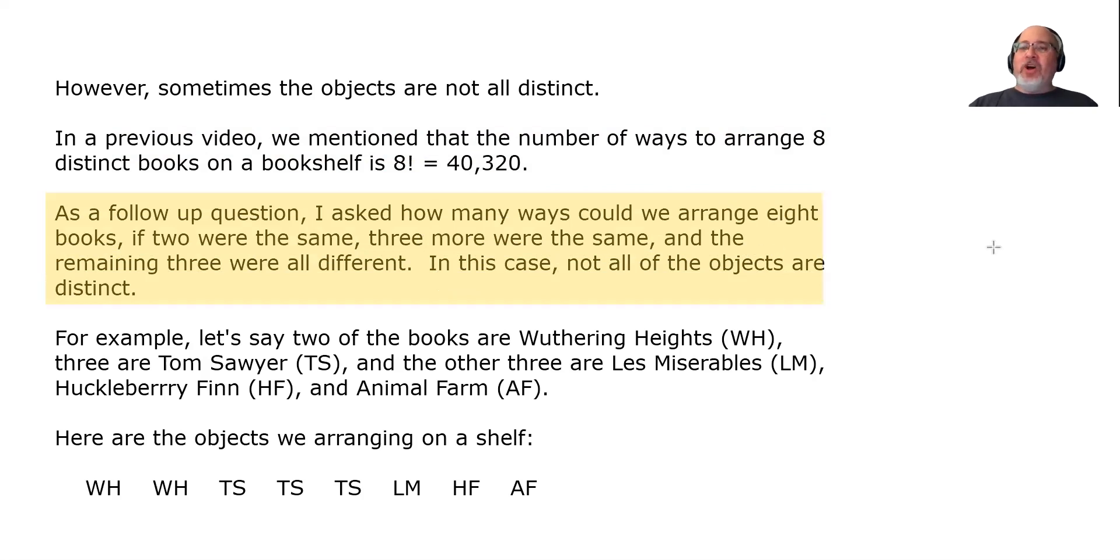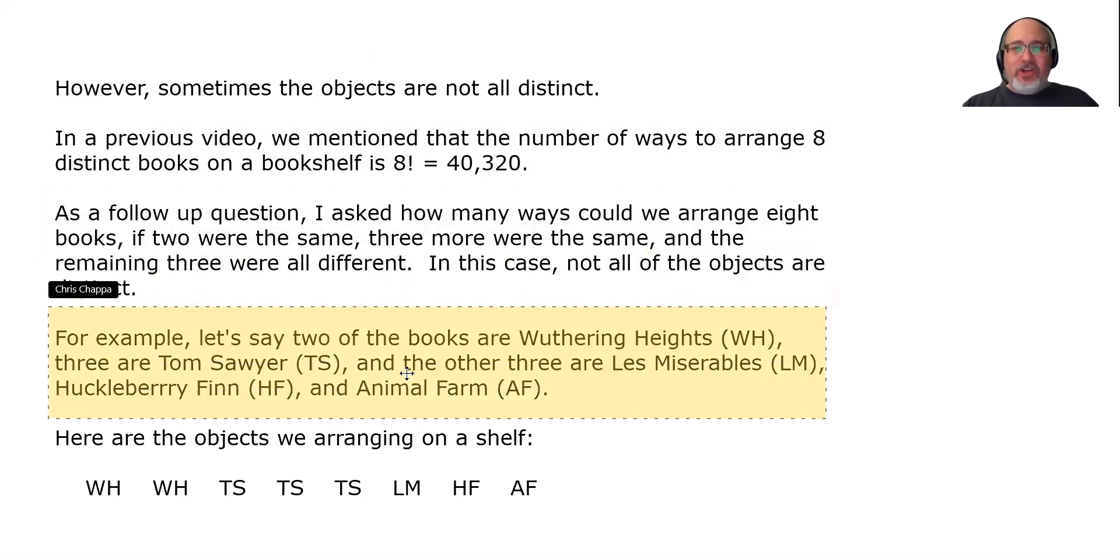As a follow-up question, I asked how many ways we could arrange 8 books if two were the same, three more were the same, and the remaining three were all different. In this case, not all the objects are distinct. And I kind of hinted that we would be solving this problem in the future. And it's kind of ironic that we're about to solve it in the future, but we've actually also solved it in the past. You just didn't know that yet.